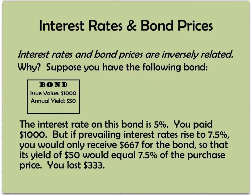The third and final thing to know about interest rates is that interest rates and bond prices are inversely related, just like interest rates and the money supply. Let's say you are issued the following bond. You paid $1,000 for it. It's a 10-year bond, and it pays $50 a year for 10 years, at the end of which you'll get your $1,000 back. Clearly it's paying 5% — $50 is 5% of $1,000.